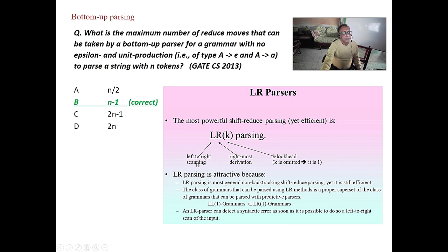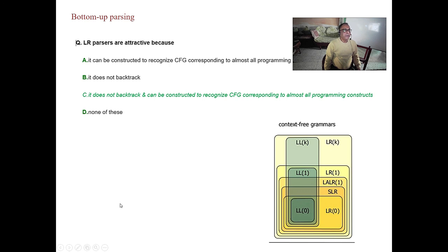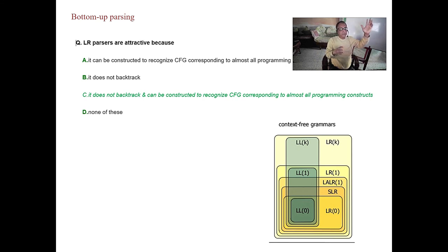LR(K) parsing means: left-to-right, rightmost derivation, and K lookahead. Only 1 is sufficient. LR(1) is the superset of LL(1). LR parsers are attractive because they do not backtrack — this is very vital. LR(1) does not backtrack, but LL(1) has the restriction that no left recursion is allowed, whereas LR(1) allows left recursion and right recursion, making it more general.